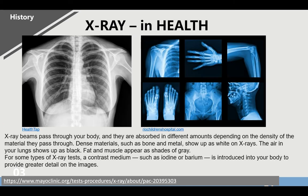While the common X-ray film has been in our medical field for a very long time, X-ray beams pass through your body and are absorbed in different amounts depending on the density of the material they pass through. Dense materials such as bone and metal show up as white on X-rays. The air in your lungs shows up as black. Fat and muscle appear as shades of gray. For some types of X-ray tests, a contrast medium such as iodine or barium is introduced into your body to provide greater detail on the images.